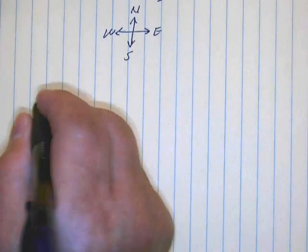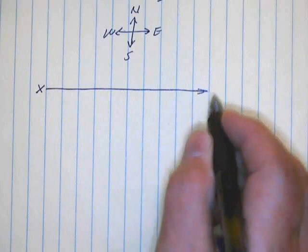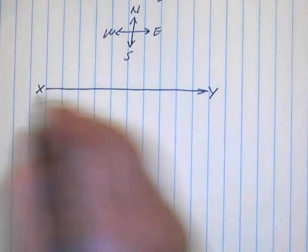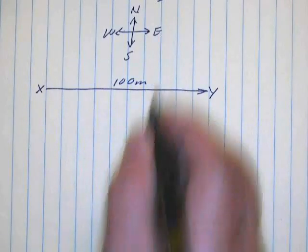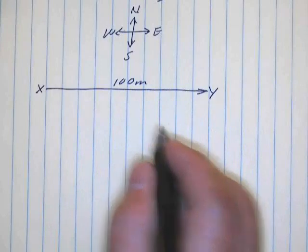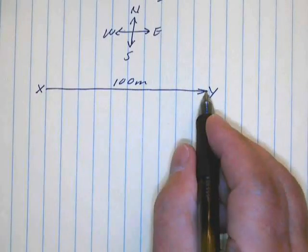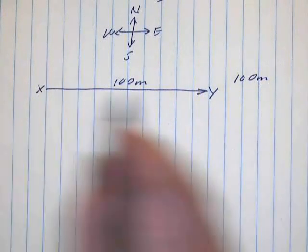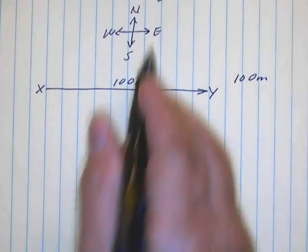let's suppose that we start at point X and walk or run a distance to point Y, and that distance is going to be 100 meters. In this case, the distance that you walked was 100 meters. The displacement — your displacement — is 100 meters east.